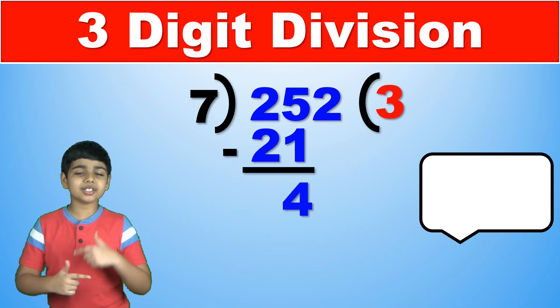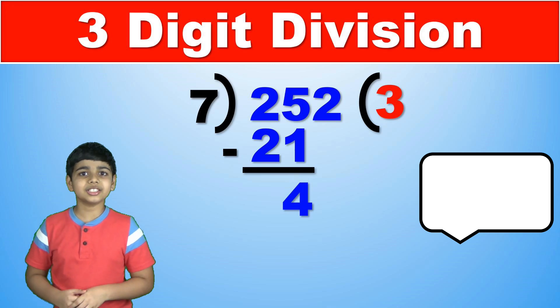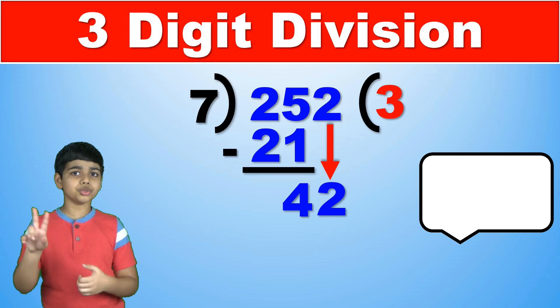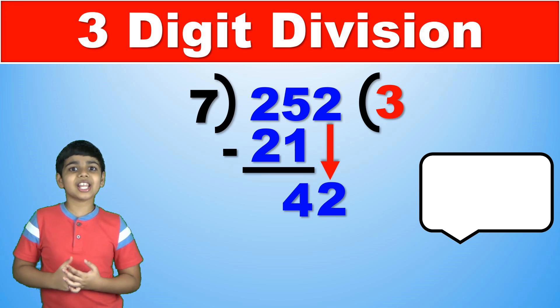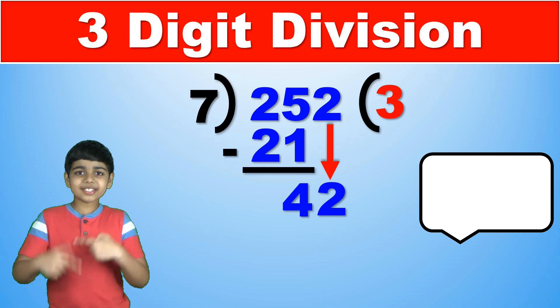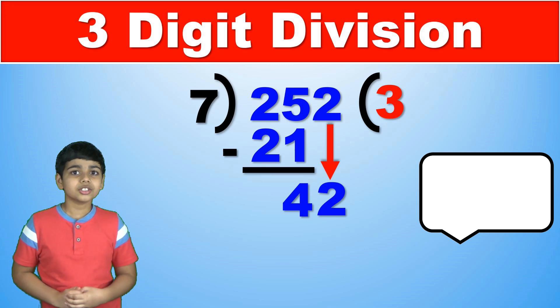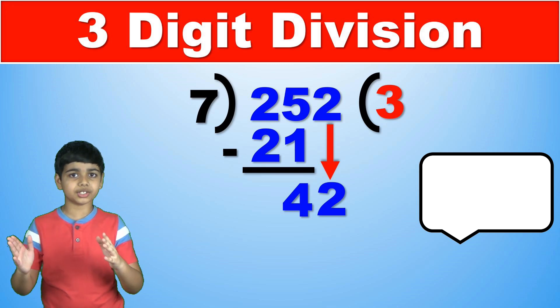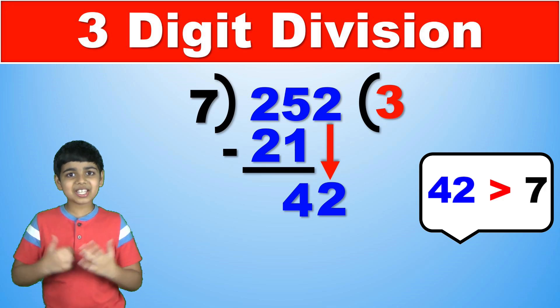And the final step in the cycle that we're repeating is to drop down the next digit which would be 2. So we drop that down and since we now have 42 we can repeat the cycle over again. So is 42 greater than 7? Yes.